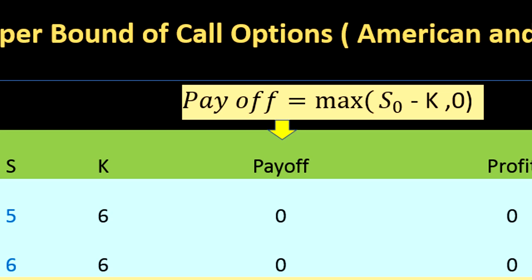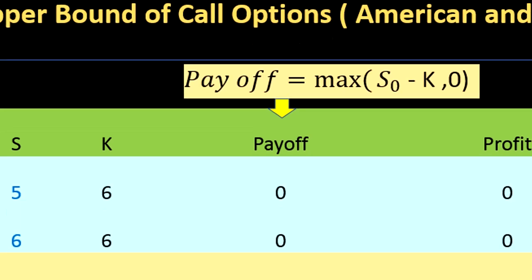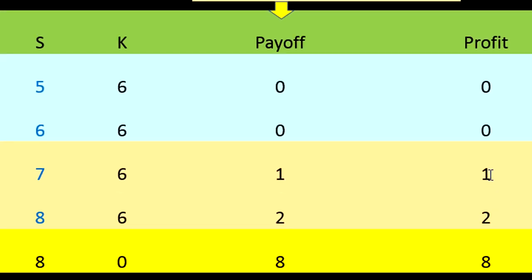Now you can see, once the value of the stock moves beyond the strike, beyond $6, to $7, $8, you are starting to make positive payoffs. In these cases, the option is valuable. As your underlying stock moves beyond the strike, the call option becomes valuable.